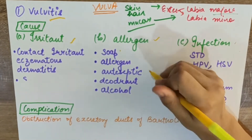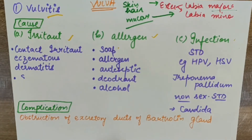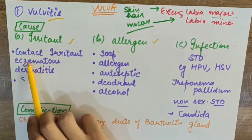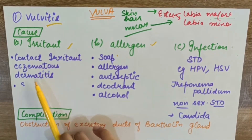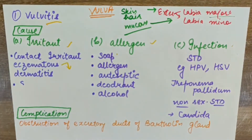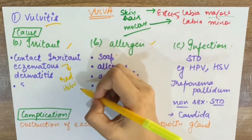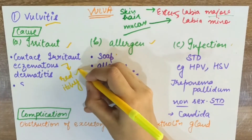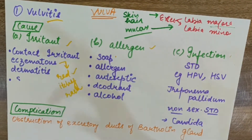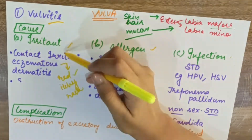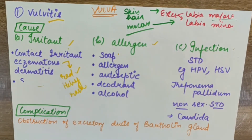Examples of irritants or allergens include soap, antiseptic, perfume, deodorant, and alcohol. If the cause is an irritant, what happens is contact irritant eczematous dermatitis. Eczema is a red, itchy rash. The irritation causes itchiness and redness, which becomes a rash and can slowly become a plaque. So irritant contact causes eczematous dermatitis - that is, skin inflammation.